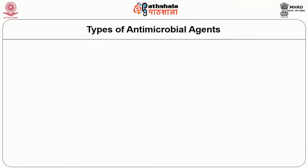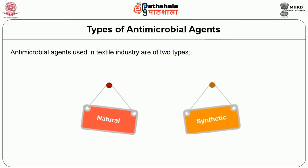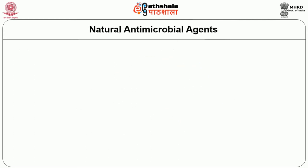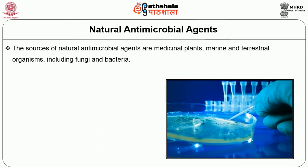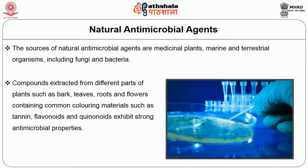Next we will have an insight into the types of antimicrobial agents. Antimicrobial agents used in the textile industry are of two types: natural and synthetic. The sources of natural antimicrobial agents are medicinal plants, marine and terrestrial organisms including fungi and bacteria. Compounds extracted from different parts of plants such as bark, leaves, roots and flowers contain common colouring materials such as tannin, flavonoids and quinoids that exhibit strong antimicrobial properties. These antimicrobials are eco-friendly and non-toxic.